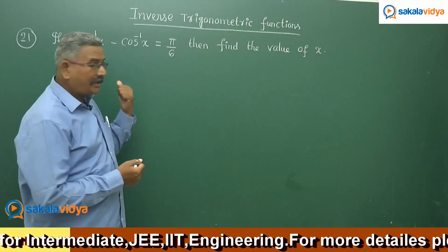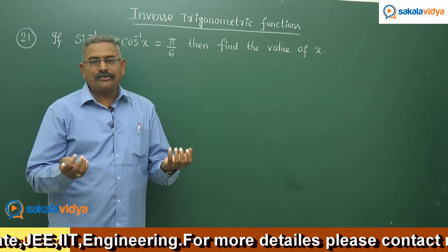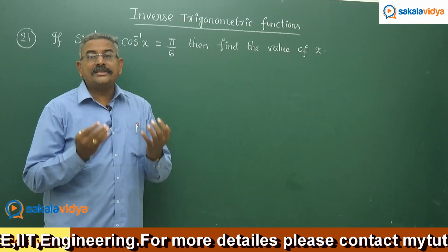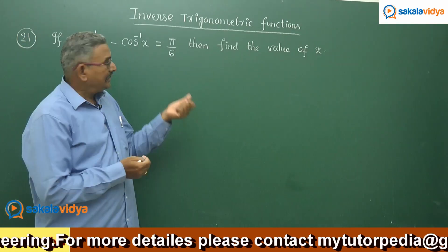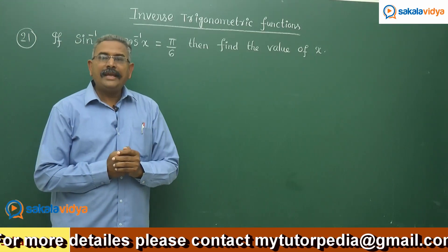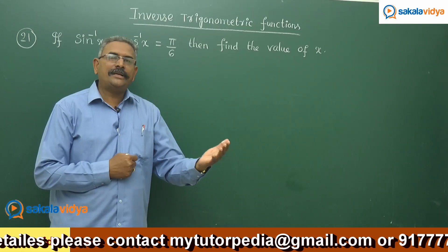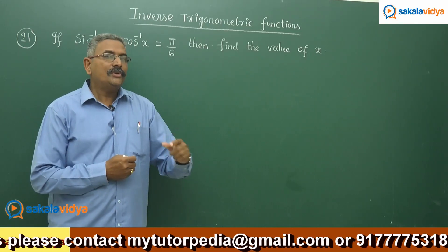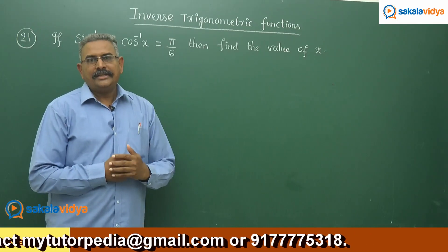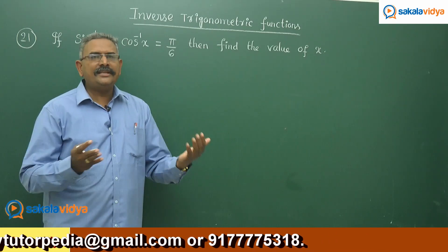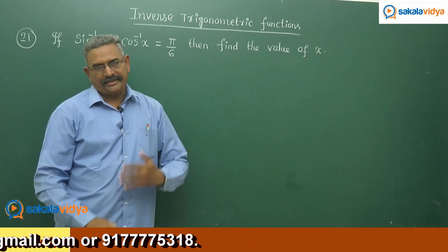Otherwise, we can adopt the other method also. We have the relationship between sin inverse x and cos inverse x. We know the formula: sin inverse x plus cos inverse x equals to pi by 2. Solving these two equations, we can find sin inverse x, and from that easily find the value of x. It is better to follow the second method now.